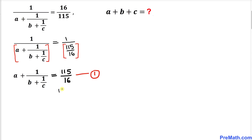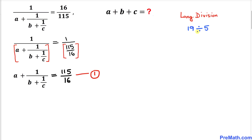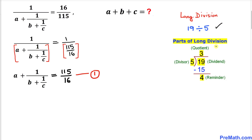Now we are going to manipulate equation 1 to find the value of a plus b plus c. We will be using the concept of long division. Here's a quick example: 19 divided by 5. This could be written using the long division algorithm — 19 is the dividend, 5 is the divisor — and we get 3 as a quotient with a remainder of 4. So these are the parts of our long division algorithm.